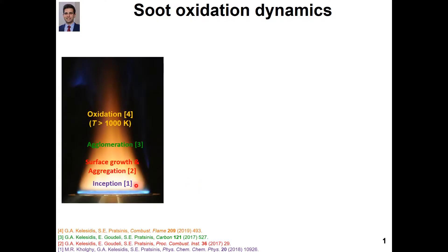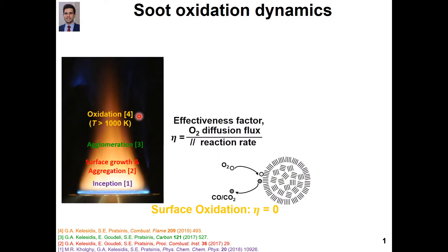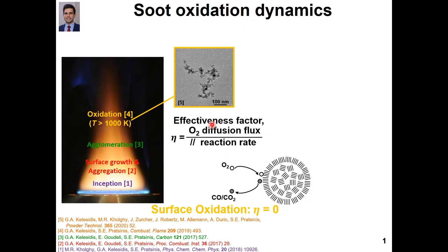Soot nanoparticles are nucleated and grow by surface reactions, aggregation, and agglomeration before they react with oxygen at high temperatures above 1000 Kelvin at the exhaust of the flame. At these conditions the effectiveness factor, which quantifies the relation between oxygen diffusion and reaction with soot, has a value close to zero. So surface oxidation is dominant and reduces the soot mobility diameter by removing mass from each surface.